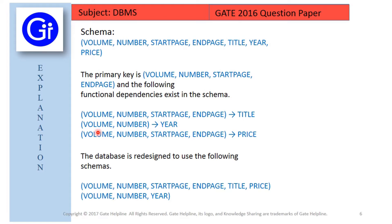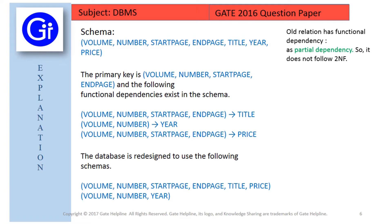Now we check the old schema for second normal form. 2NF requires no partial dependency — the LHS must not be just a part of the candidate key while the RHS has non-prime attributes. However, in all three FDs, the LHS contains parts of the primary key such as volume, number, start page, and end page, while the RHS contains non-prime attributes: title, year, and price. This is a partial dependency, which violates 2NF. Therefore, the old relation does not satisfy second normal form.